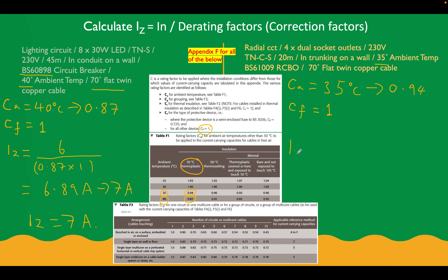Now for the radial circuit: IZ equals our IN of 20 amps divided by our correction factors: 0.94 × 1. That gives us 21.27 amps, which we round to 21 amps. We've now worked out the current carrying capacity of the cables in the installed conditions — the radial circuit cable needs to carry 21 amps, and the lighting circuit cable needs to carry 7 amps. This will help us select our cable in the next stage.